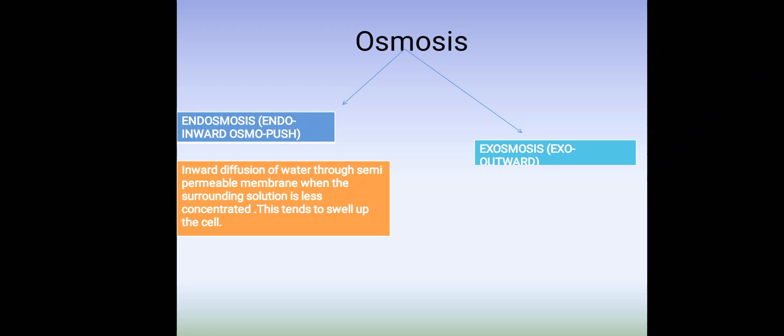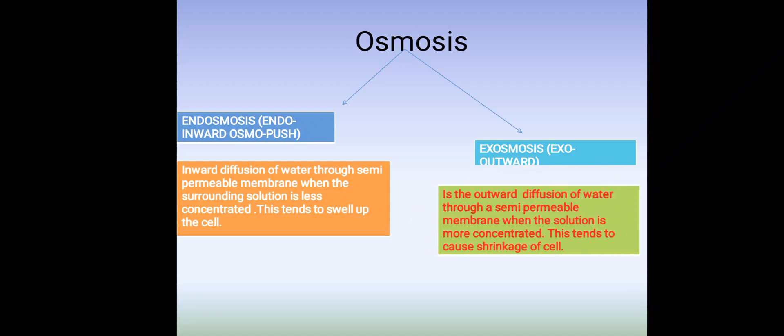Exosmosis is the outward diffusion of water through a semi-permeable membrane when the solution is more concentrated. This tends to cause shrinkage of the cell. So in case of exosmosis, there is shrinkage of the cell.